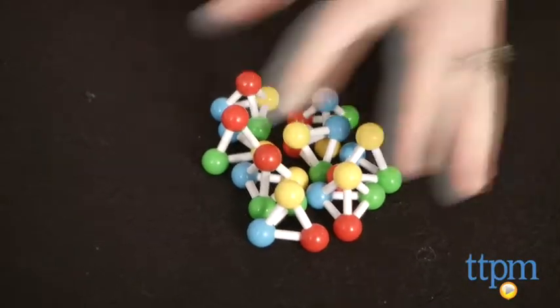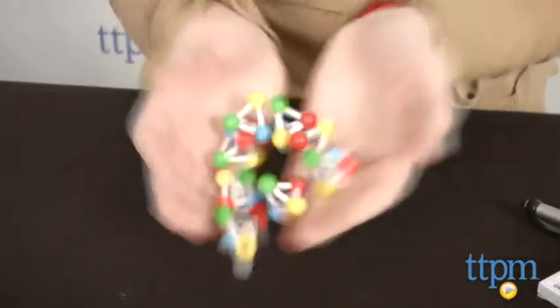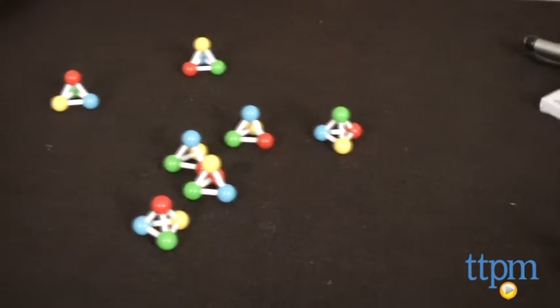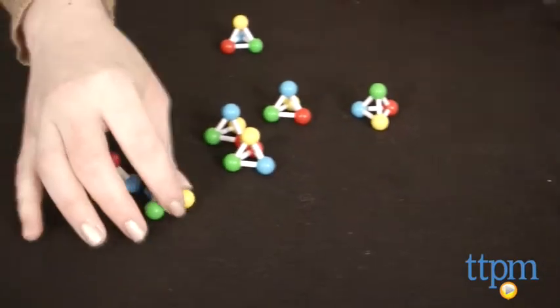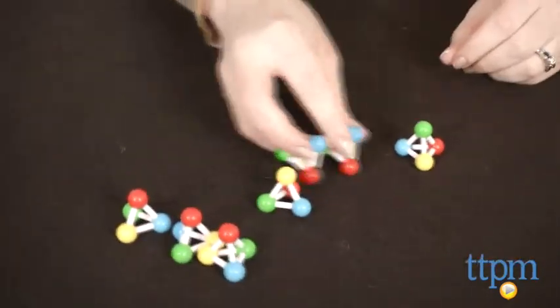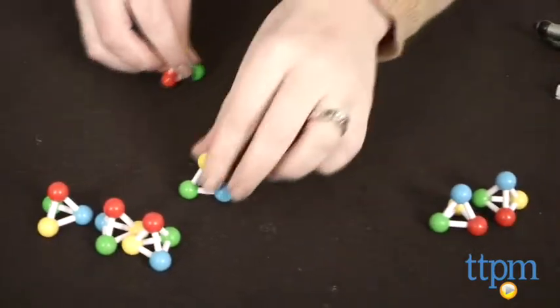But if you complete all twelve categories, you can play the Call It category, where before you roll, you call out the color you think will be facing up on the majority of the tetras after one roll. If you get it correct, you earn 25 points.